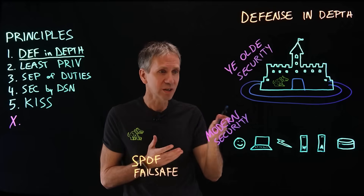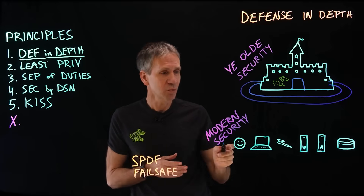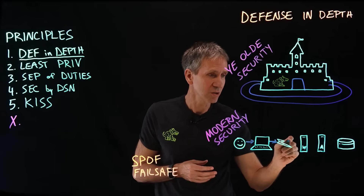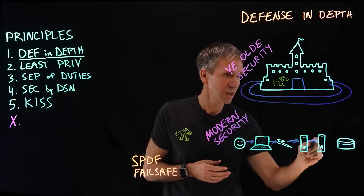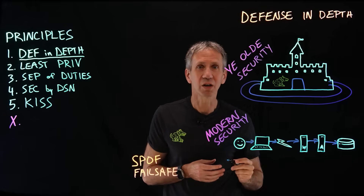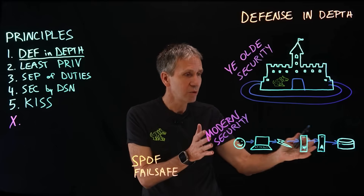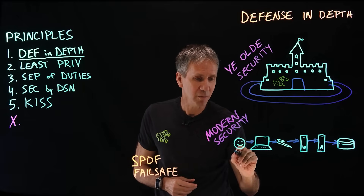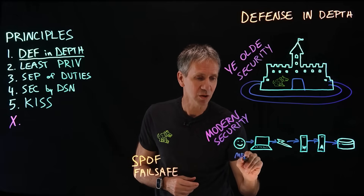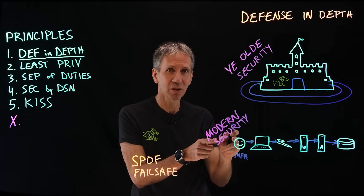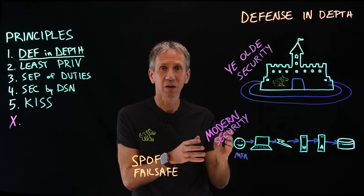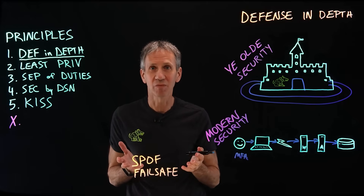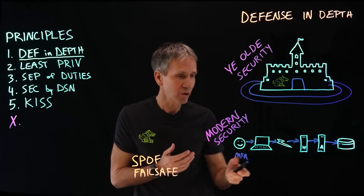Now let's transition into a modern security example. We've got a user on a workstation going across a network to get to a web server, which hits an app server, which ultimately hits a database. For defense in depth here, one thing I might do is add multi-factor authentication — a system where I make sure the user is who they are by asking for something they have, something they are, something they know, or some combination of those.